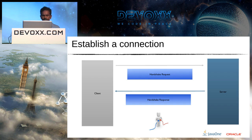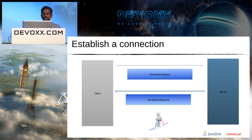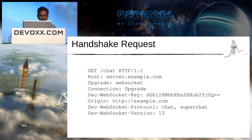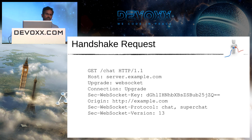Let's look at how client and server establish a connection. The client sends a handshake request, the server validates it and sends a handshake response, and the client validates the response — at which point the connection is established. The handshake request is essentially an HTTP request using the standard upgrade mechanism. HTTP 1.1 already has this upgrade mechanism so requests can upgrade to a newer version of HTTP or a completely different protocol.